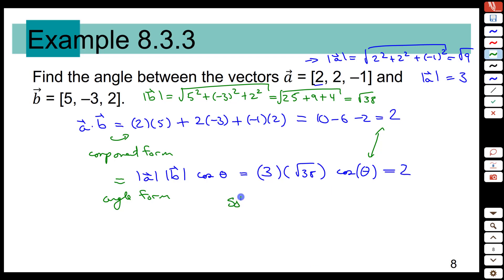So we'll have cos of theta is 2 over 3 square root of 38. And if we grab our calculator, cos of theta is approximately 0.108. And if we do the angle inversion of that, the inverse cosine, we get an angle of approximately 1.462 radians, which is pretty close to pi over 2, in fact.